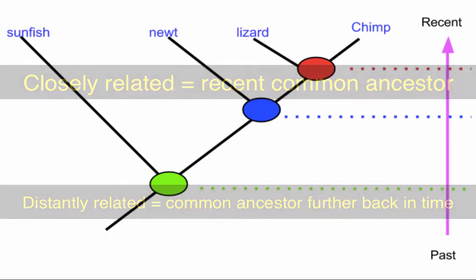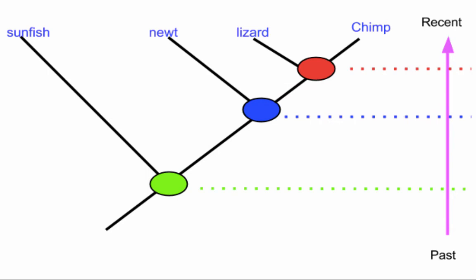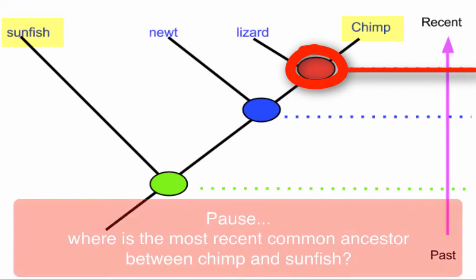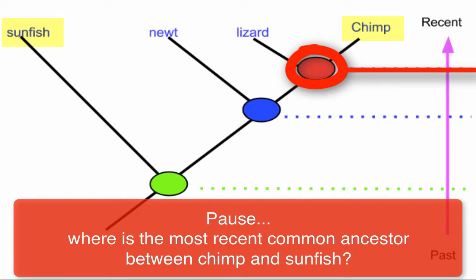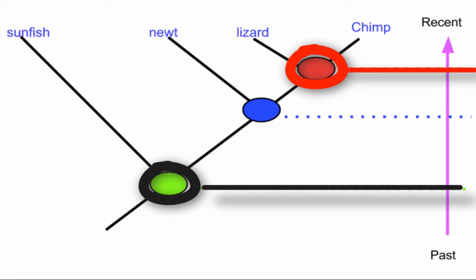So which organisms are the most closely related according to this cladogram? Pause and think about it. According to this cladogram, the most closely related organisms are the lizard and the chimp. If you look at their most recent common ancestor, it's right here — that's very recent in time. But if you compare the chimp with the sunfish, the most recent common ancestor between chimp and sunfish is this green dot here, further back in time. Compare that to the most recent common ancestor between chimp and lizard — that common ancestor existed more recently.